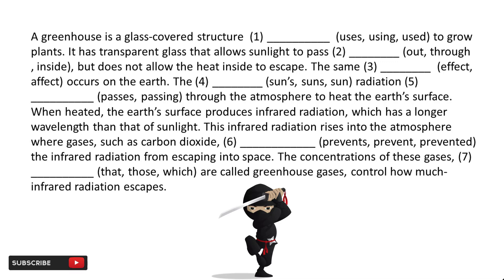The first blank: 'A greenhouse is a glass-covered structure [blank] to grow plants.' The three options are: uses, using, used. Now I'll tell you why one is correct. Many of you may have already guessed, but it's important to know why.